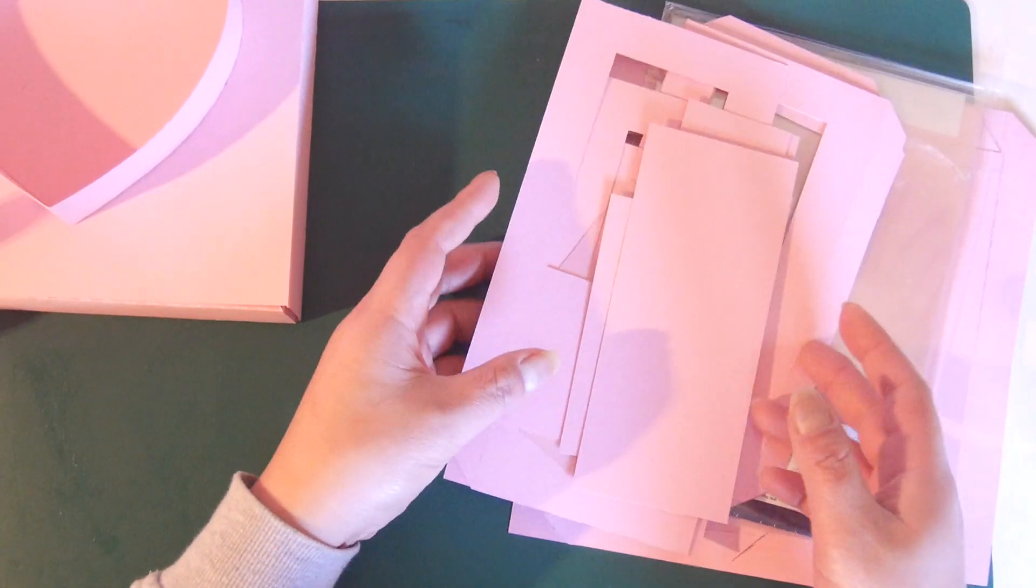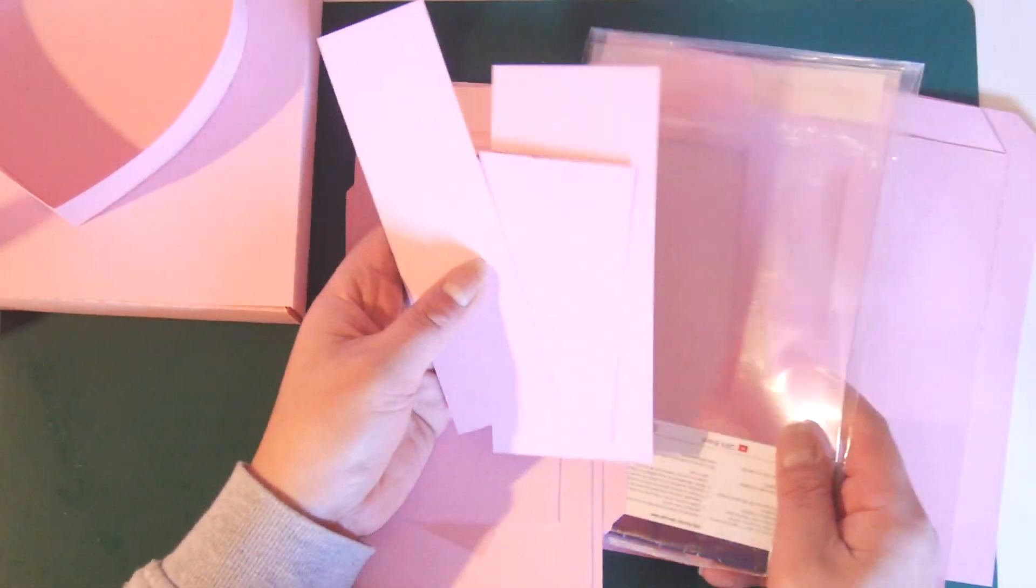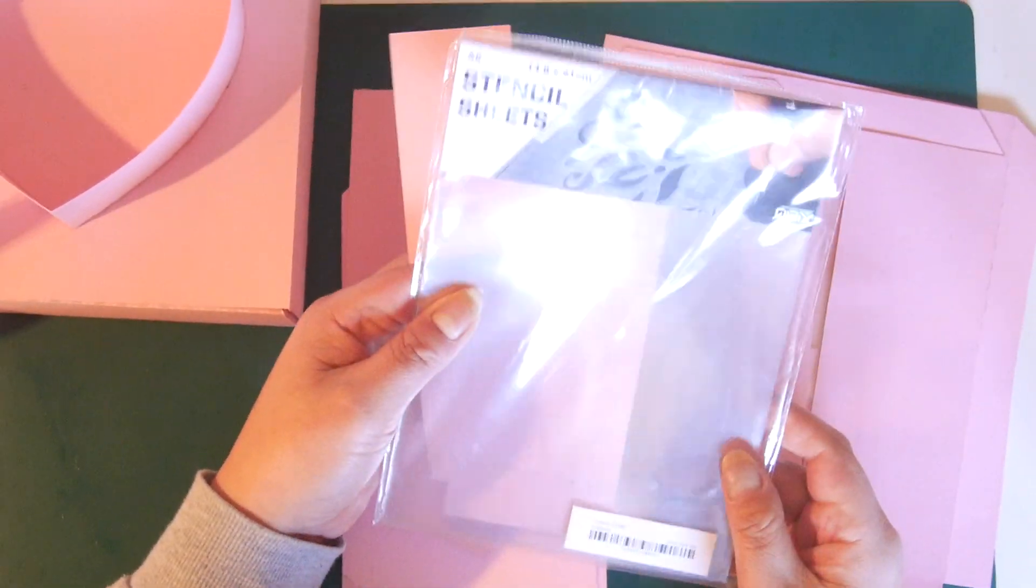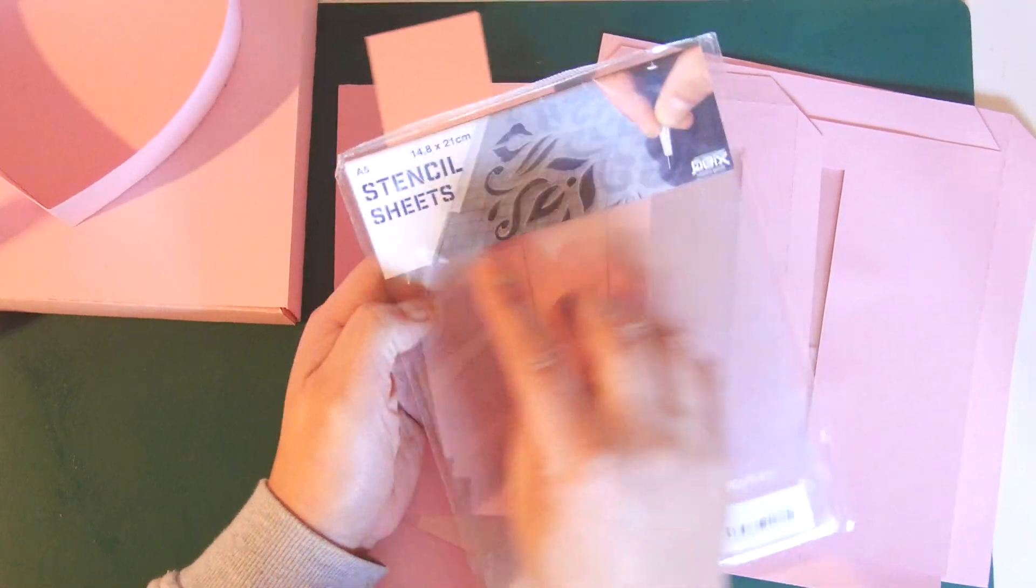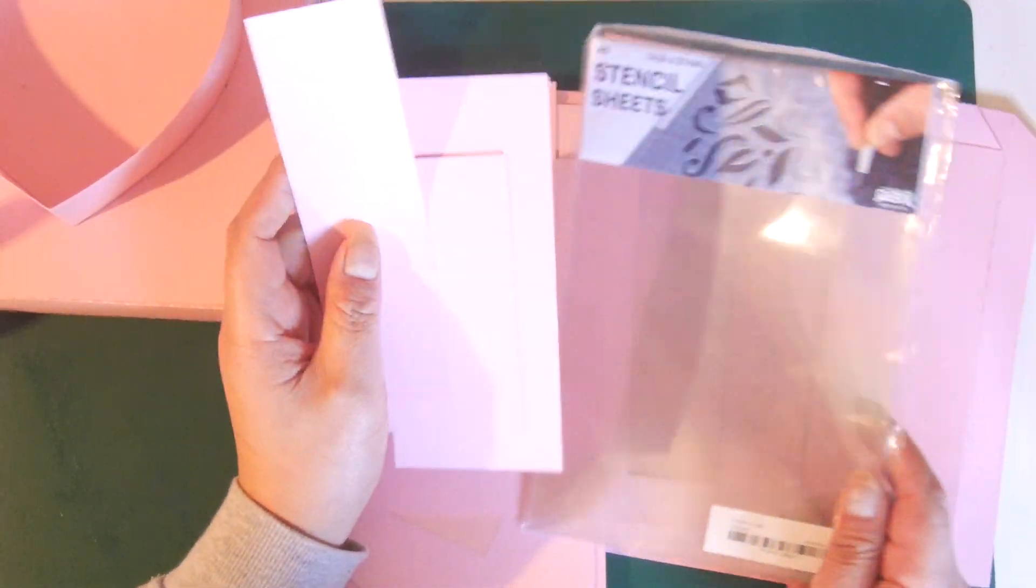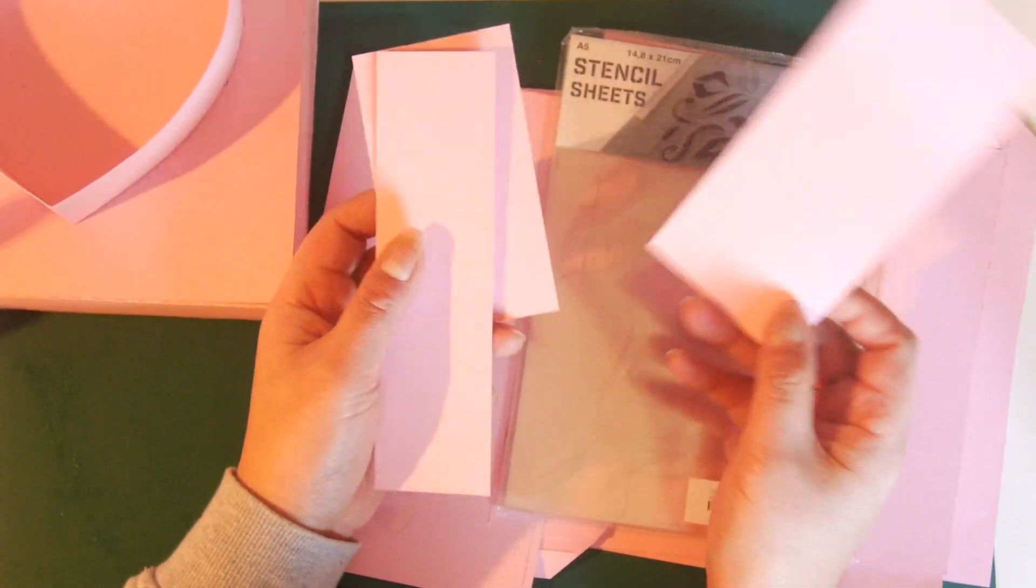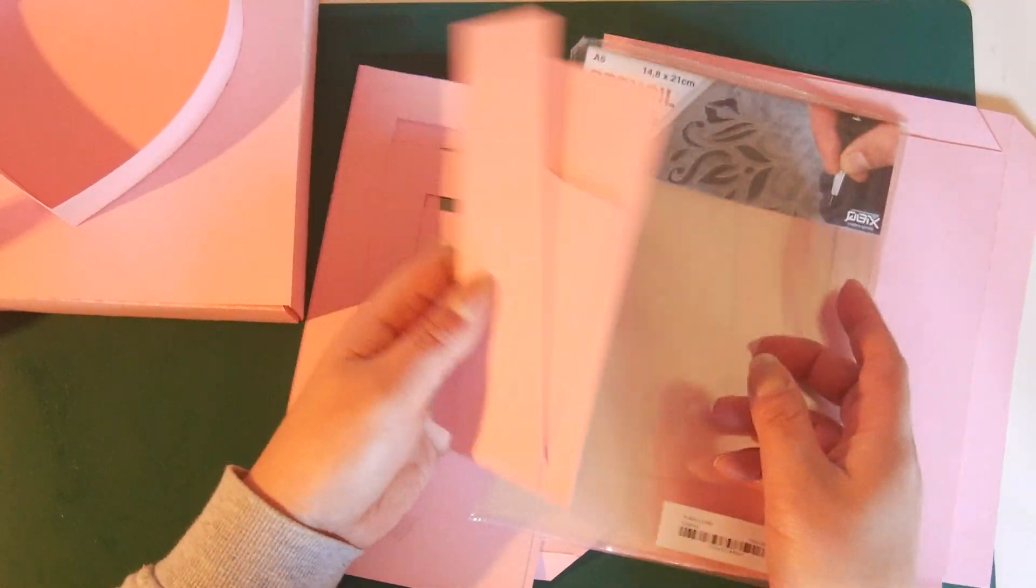These are the templates for the plastic sheets. I would recommend ordering A5 size - so it's small. Then cut the templates out, either using the templates or you can cut them another way.